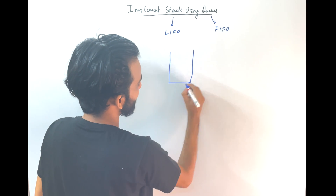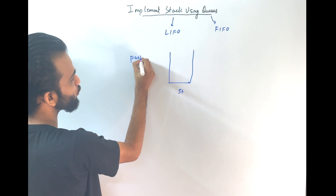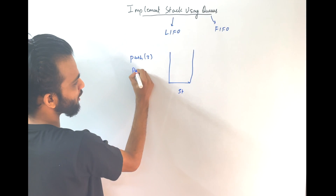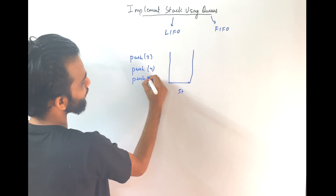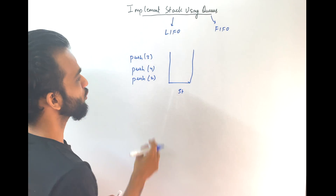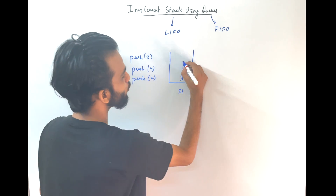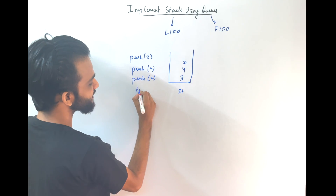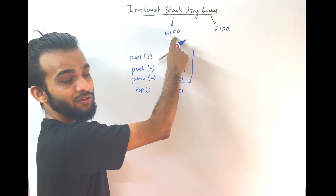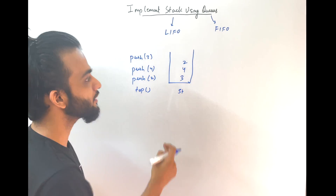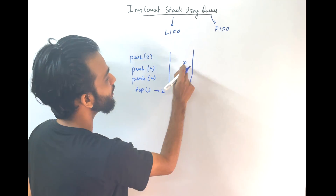Imagine this is your stack. I say push of 3 to be the first operation, push of 4 to be the second operation, push of 2 to be the third operation. So push of 3 goes here, push of 4 goes here, push of 2 goes here. Right after that when I say top — since it's a stack it follows last-in first-out — 2 was last entered to the stack, so the top will be 2.